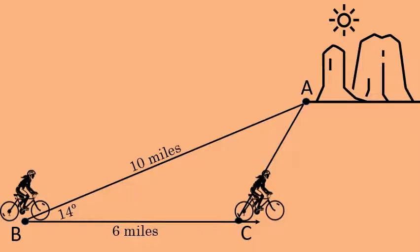This problem can be represented as a triangle, and we know three parts of the triangle. We know the length of a side, we know an angle, and we know the length of a second side. More specifically, we know two sides and the included angle.